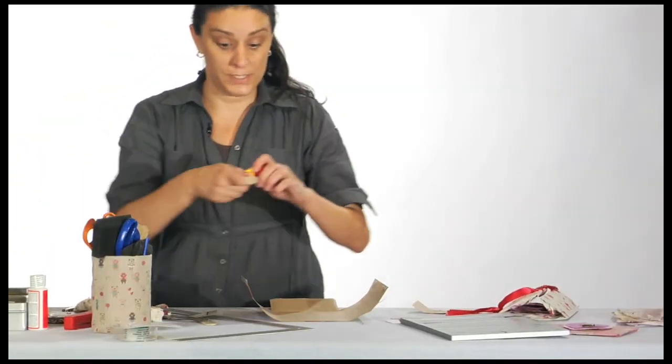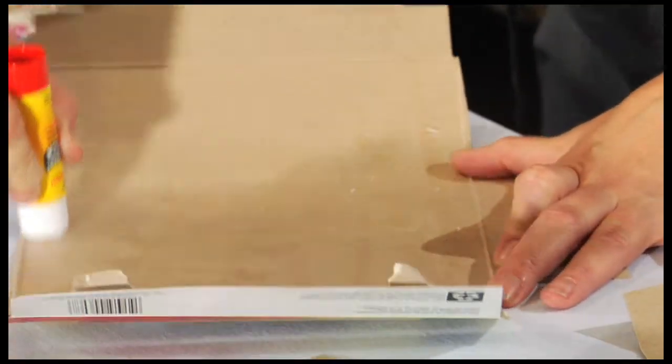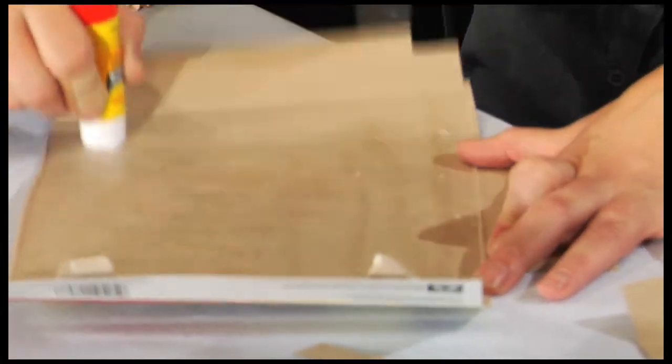What you want to do is take a glue stick. Take the glue stick and apply it to the side that you're going to adhere the fabric to.